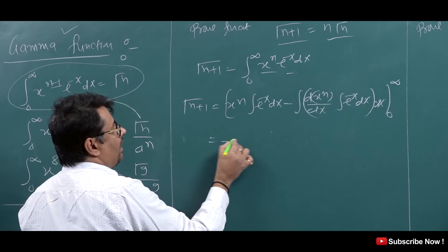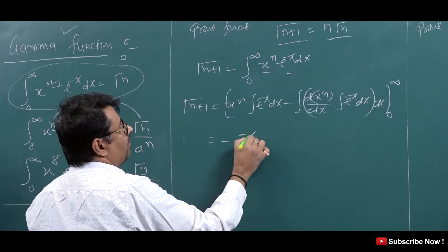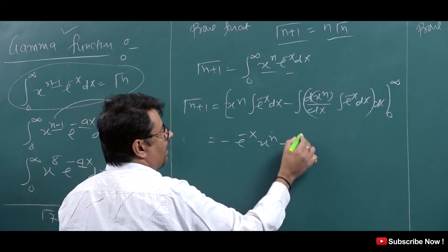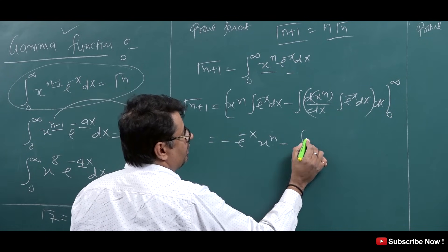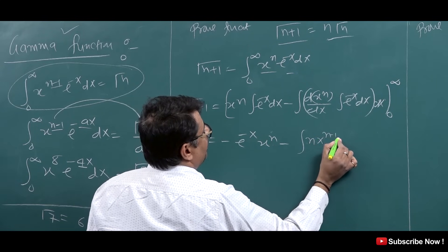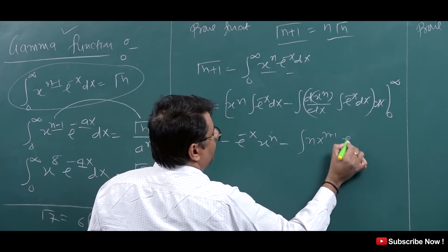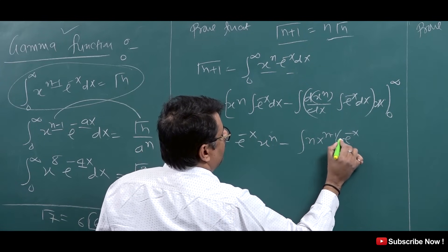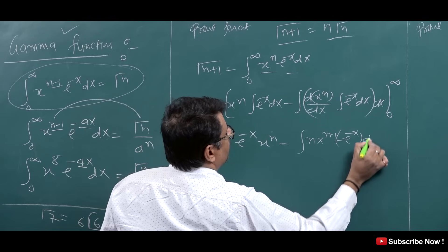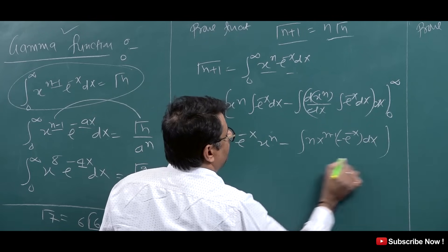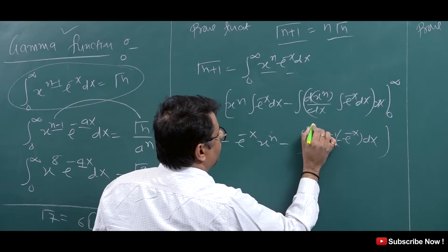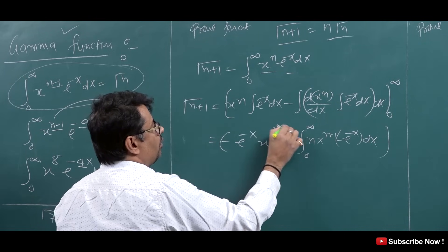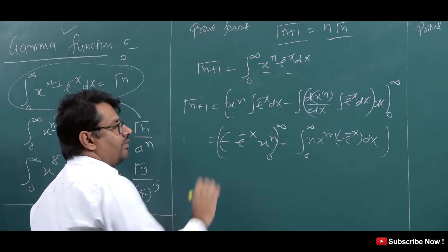Applying integration by parts: [−e^(−x) · x^n]₀^∞ + ∫₀^∞ n·x^(n-1)·e^(−x) dx. Now evaluating the limit: at x→∞, e^(−∞) = 0, and at x=0, x^n = 0, so the boundary term vanishes.